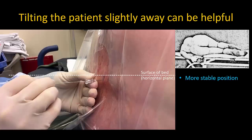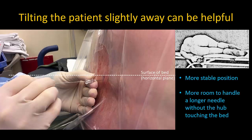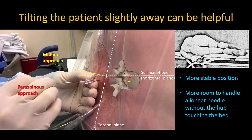The patient in the preceding video was in a modified SIMS position rather than a strictly lateral position. This position, where the patient slants away from you a little bit, is more stable and particularly helpful in the obese patient. It also makes it easier to maneuver the needle when inserting it from the dependent side, which would otherwise tend to touch the bed, especially with longer needles. Attention must be paid to the angle of the slope of the patient's back, as this will determine the correct needle trajectory relative to the horizontal plane.